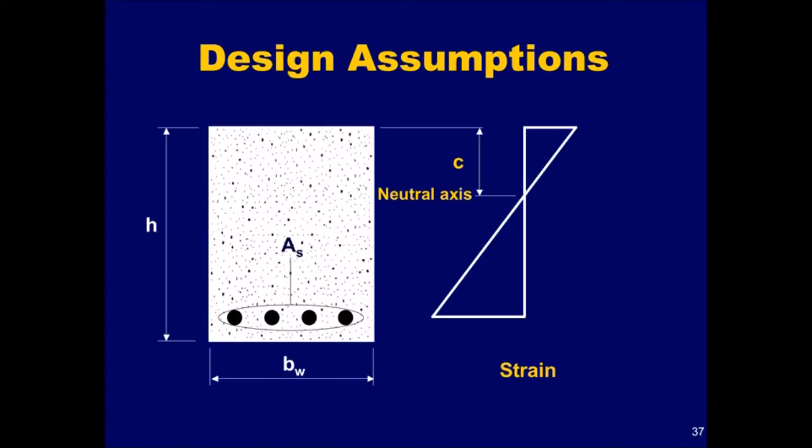The first design assumption is that the strain in the reinforcement and the concrete is directly proportional to the distance from the neutral axis. Many tests have confirmed that the distribution of strain is essentially linear across a reinforced concrete cross-section, even near ultimate strength. For deep beams, the strain is not linear. For these beams, a nonlinear distribution of strain must be used, or a strut-and-tie model as outlined in Appendix A may be used.